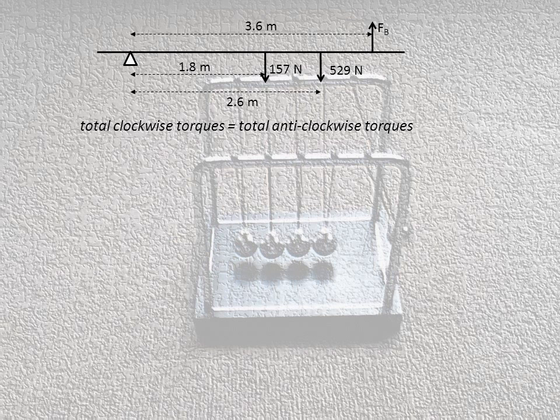I can work out the total clockwise torques and the total anti-clockwise torques. These two at the bottom, the two gravity forces, are actually moving in a clockwise direction when we have the pivot on the left-hand side. And the support force here for B is moving in the anti-clockwise direction. So 1.8 times 157 newtons is going to give us our first torque for this. And then 2.6 times 529 will give us our second clockwise torque. So we can get the total of clockwise torques from that.